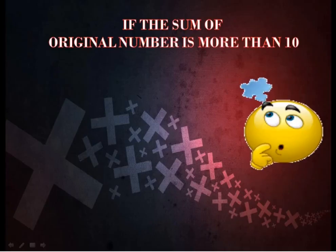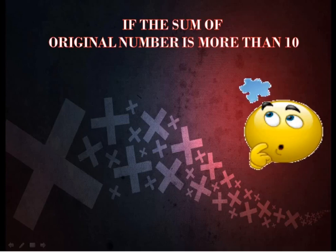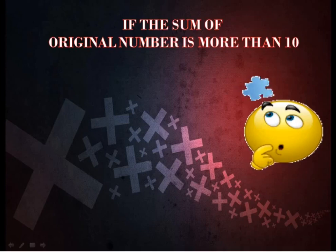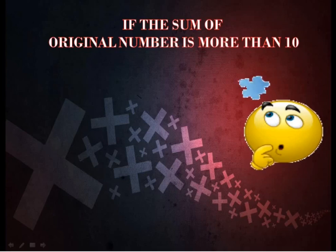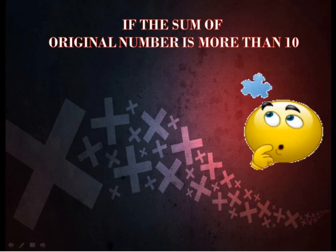Friends, in the previous example, the sum of the digits of the original number was less than 10 — that was 3. If the sum of the digits is more than 10, how can we multiply it with 11? So, let's find it out.